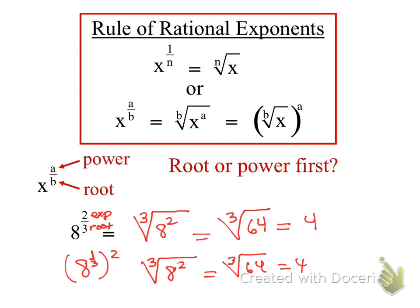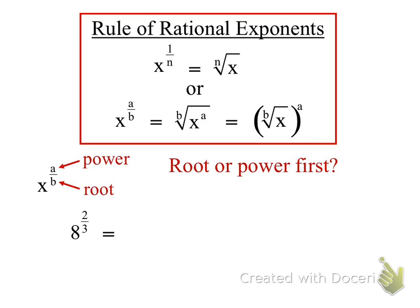Let's look at this one more time. They find the cube root first — the cube root of 8 is 2 — and then they square it. So that's another way to look at it. This time they're doing the root first and squaring later. Order doesn't matter.